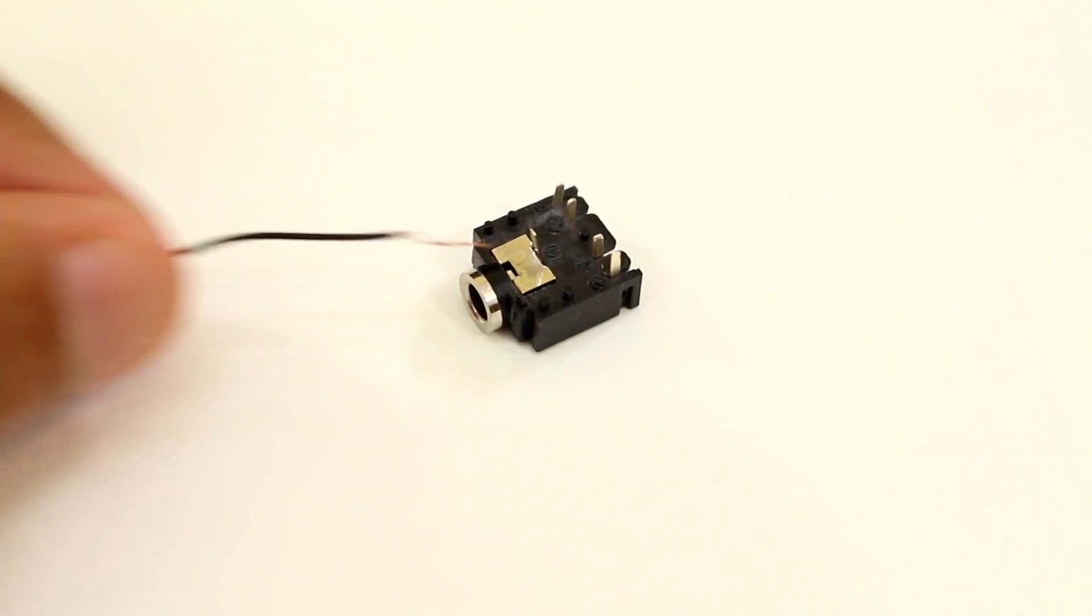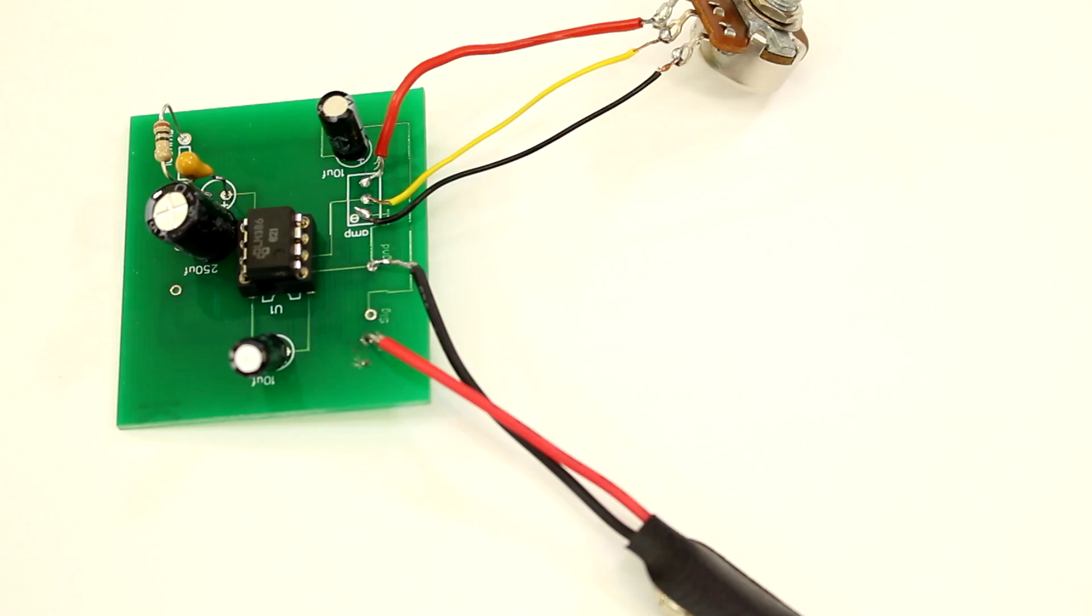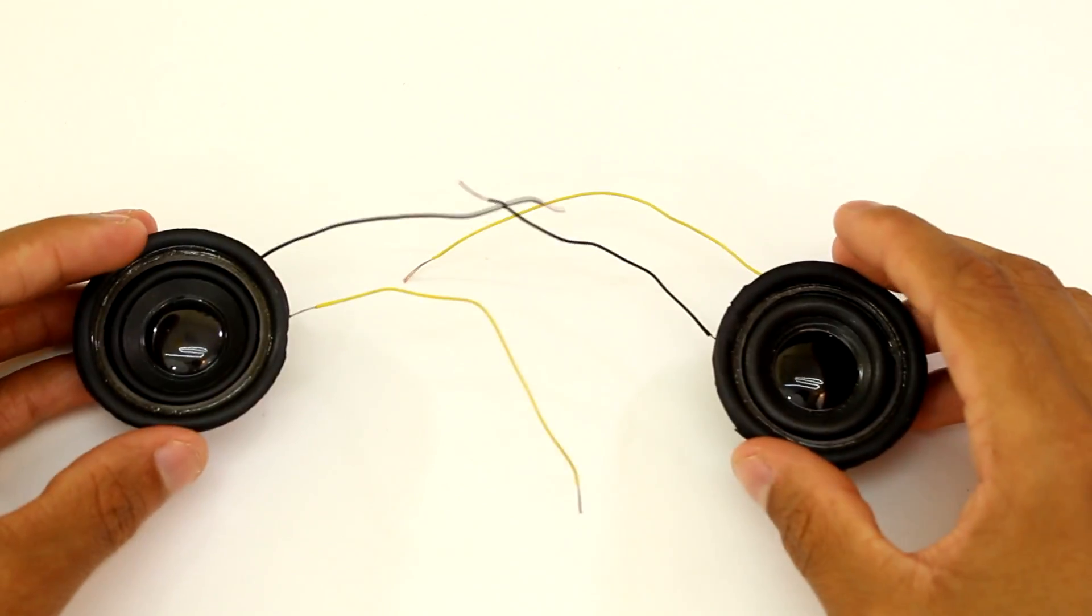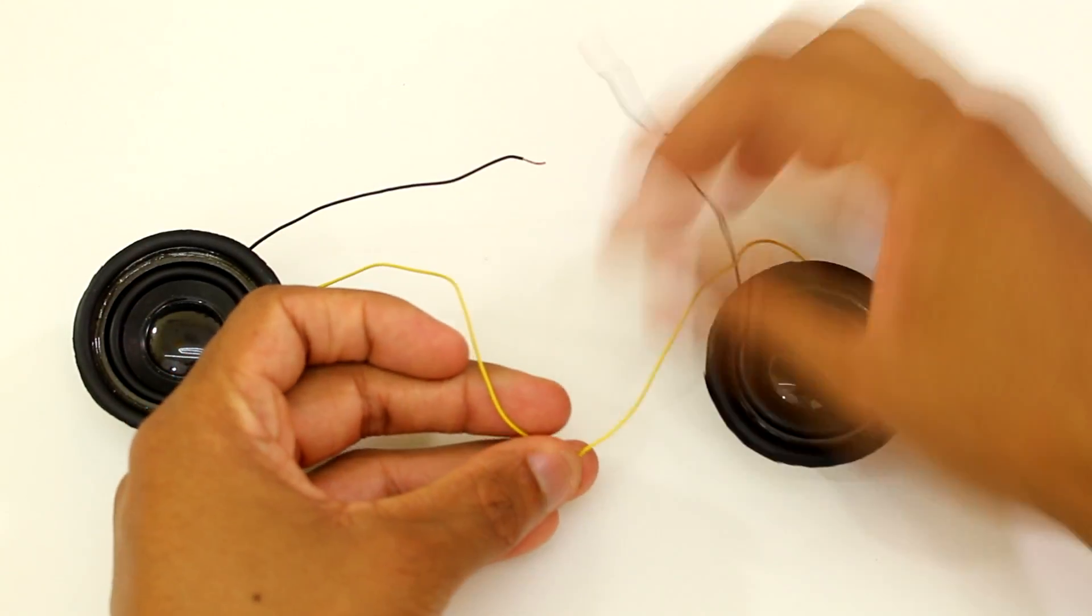We're also going to need an audio port so we can use an aux cable on these speakers. Now all that's left is to attach two speakers to the output of our circuit.